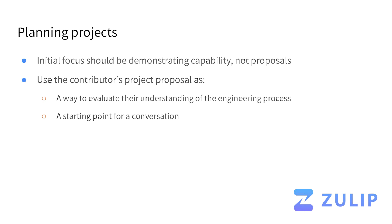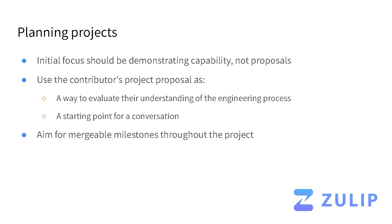We treat the proposal as a starting point for a conversation. If somebody proposes a project for, say, user settings, we can have a conversation with them about our project priorities for that part of the product. We always aim for mergeable milestones throughout the project, so whatever somebody ends up accomplishing over the summer — which can be hard to predict — there are many levels at which one can be successful. If you don't get to the very end of the project you had in mind, that's okay. You've still gotten a lot done, learned a lot, contributed to the project, and experienced the reward and feeling of accomplishment from seeing your work integrated.